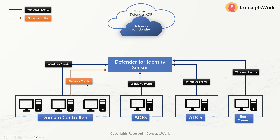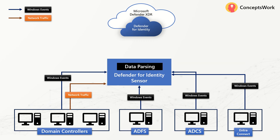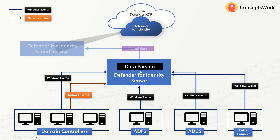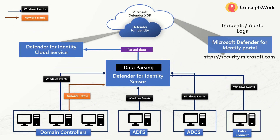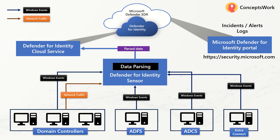So to summarize: everything related to Windows events with security context is captured from all these server categories, and network traffic is captured from the Domain Controller. Once captured, there's a decent amount of parsing done on the sensor itself, and this parsed information is sent to the Defender for Identity Cloud Service. Think of this cloud service as receiving all the logs and network activity from your on-prem environment, performing all the analysis, and triggering alerts or incidents for malicious activity.